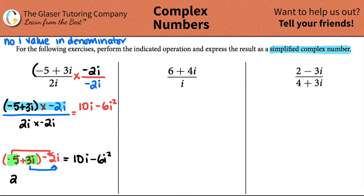Now let's work with the bottom: two i times negative two i. Two times negative two is negative four, and i times i gives i squared. So the denominator is negative four i squared.